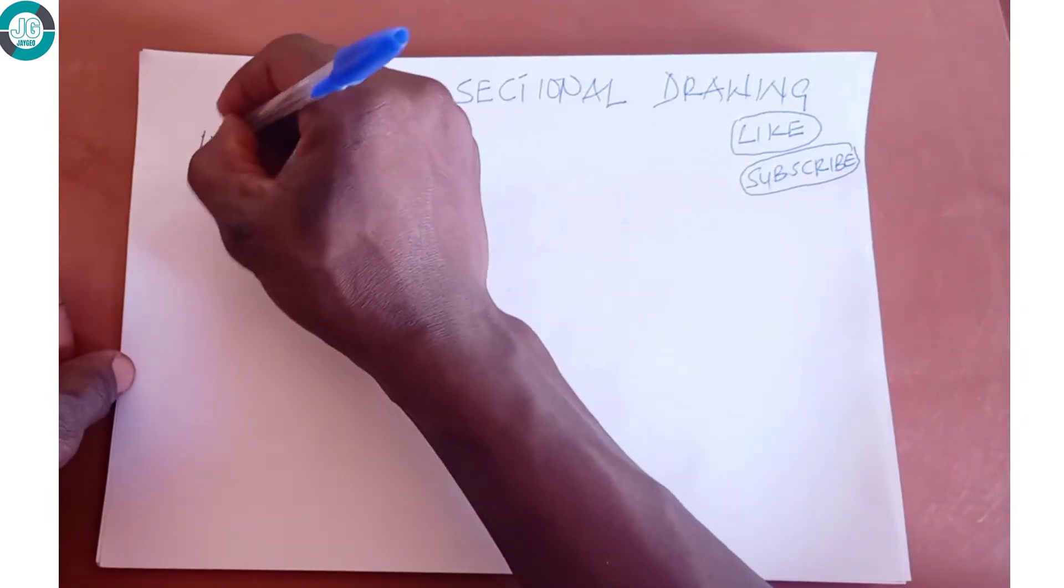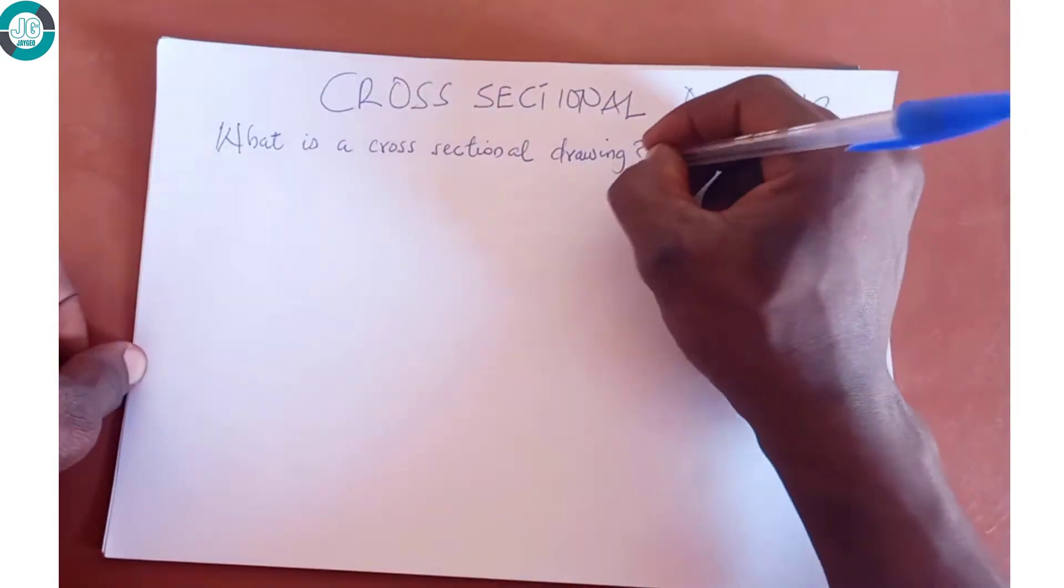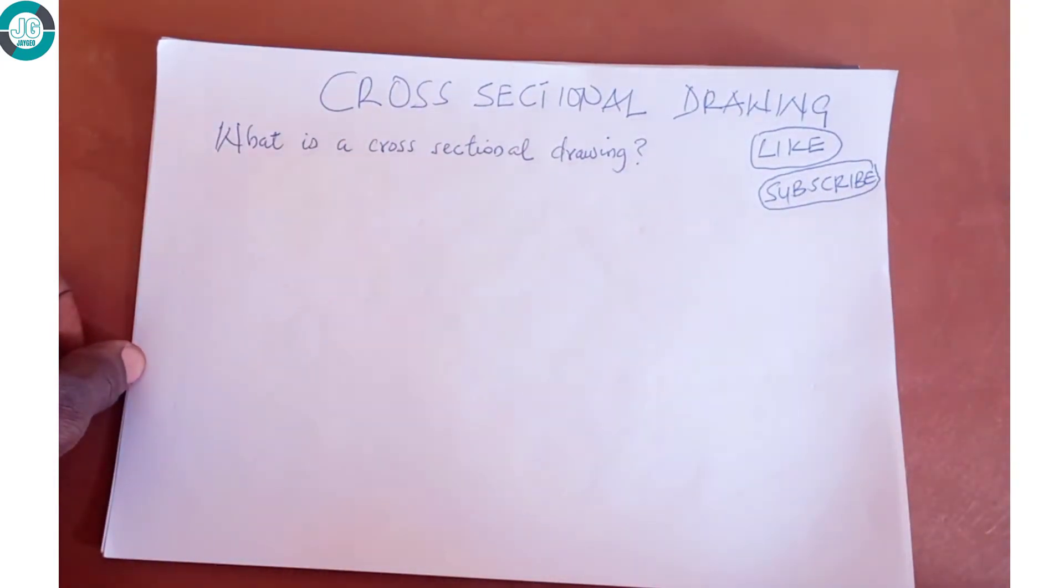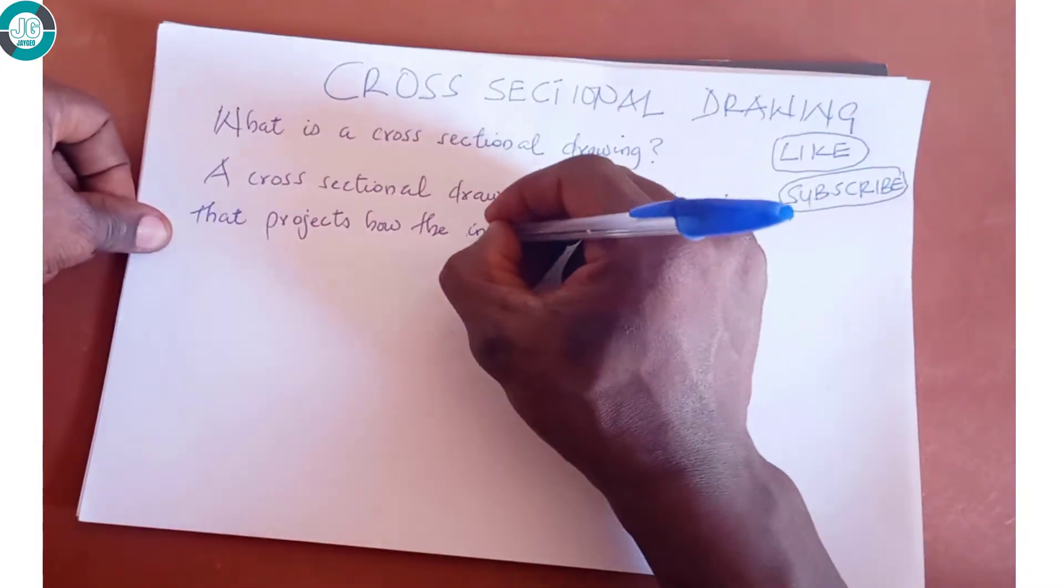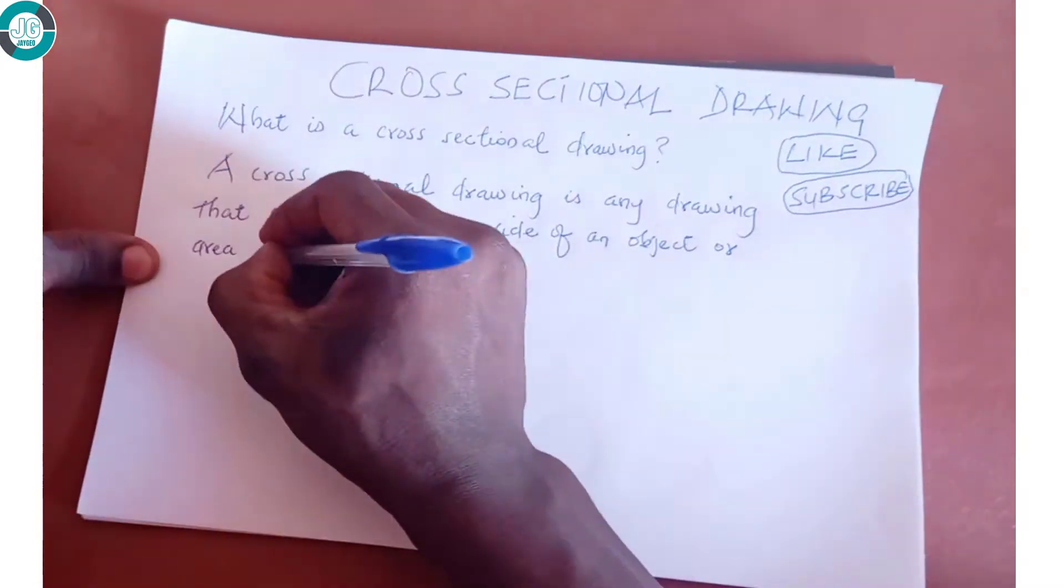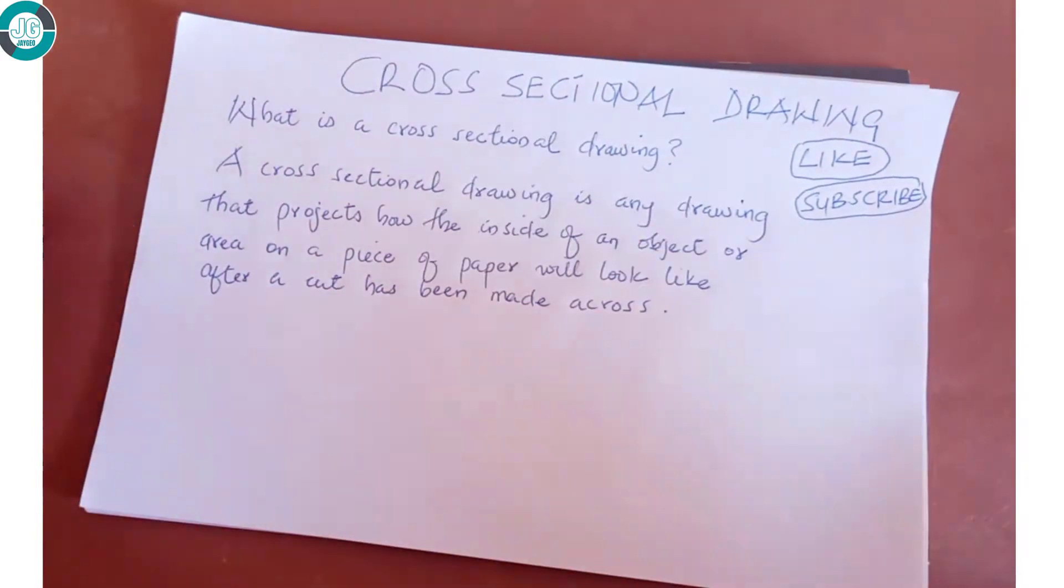So what do we understand by a cross-sectional drawing? A cross-sectional drawing is a drawing that projects how the inside of an object or area on a piece of paper will look like after a cut has been made across it.